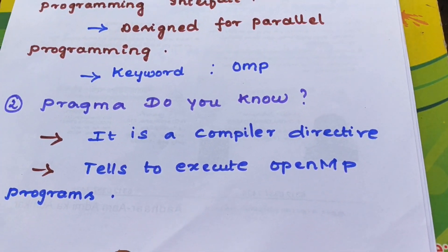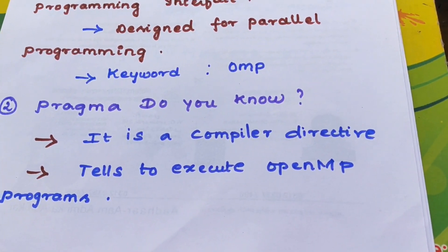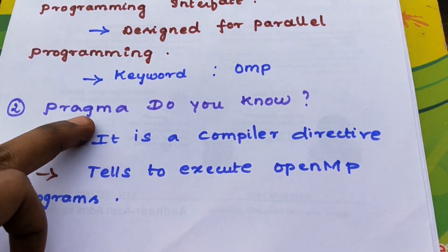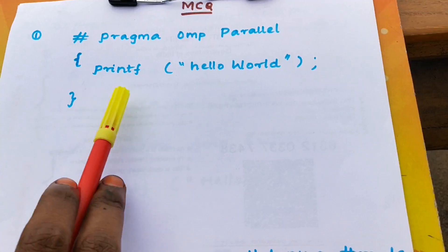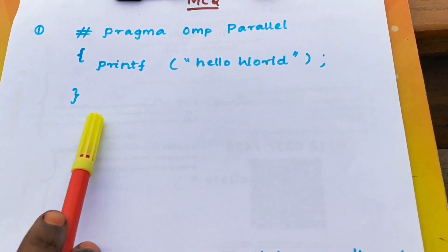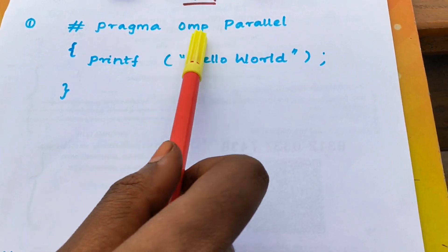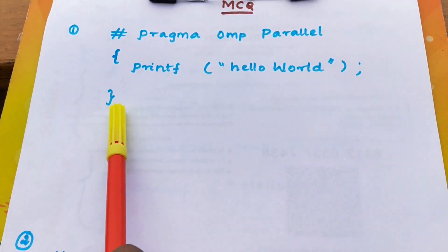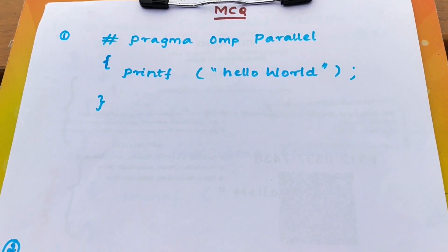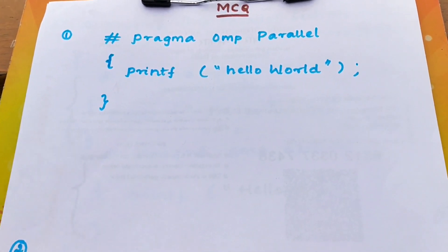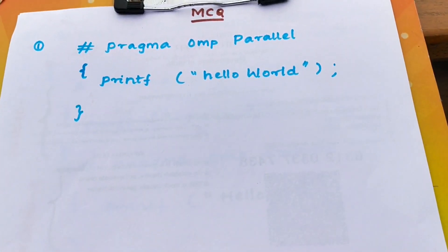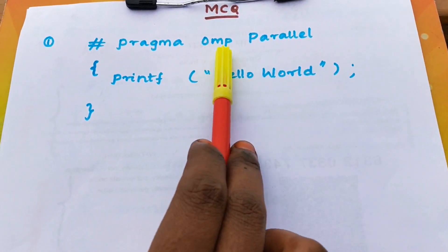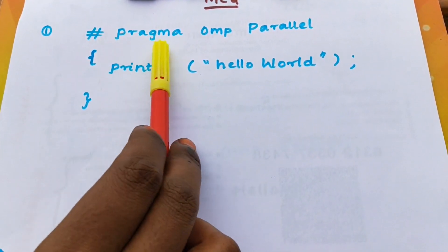That means, like hash include conio.h or stdio.h header files, pragma is used as a compiler directive. You can see in the MCQ the directive — you can see the basics, you can see what is the output. It's easy output because it's just a one-mark program. The first one is pragma omp, which is a compiler directive.